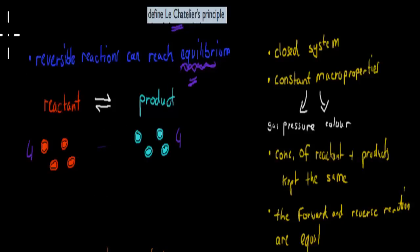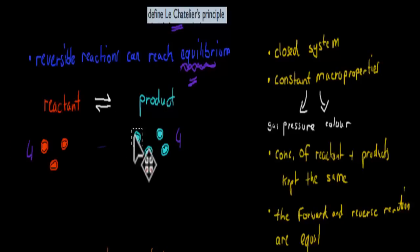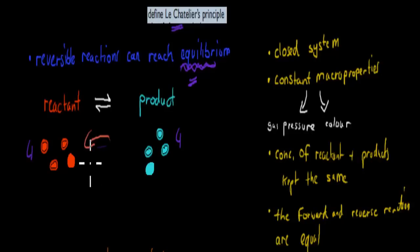Because this is actually a dynamic equilibrium, what can happen is a reactant can turn into a product — it can go over to the other side. But once this happens, to remain in equilibrium, a product has to come over and change to the other side as well. So overall, even though there's movement, there's no net change. If a reactant becomes a product, then a product has to go to the other side to become a reactant again. There is movement, but the movement is equal.